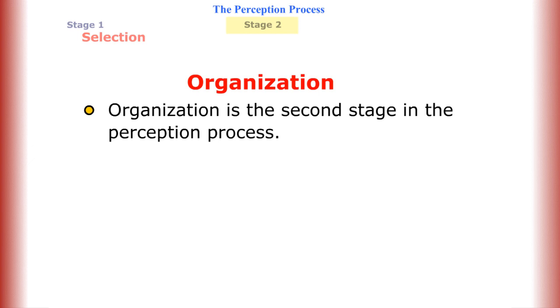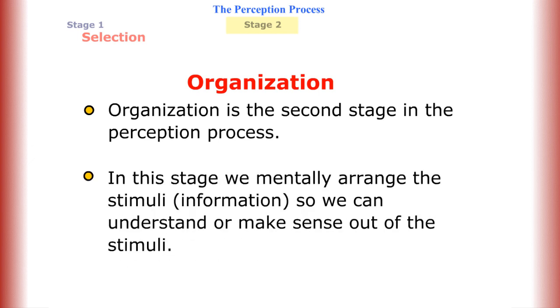Organization is the second stage in the perception process. In this stage, we mentally arrange the stimuli or information so we can understand or make sense out of the stimuli.